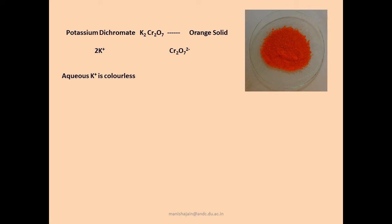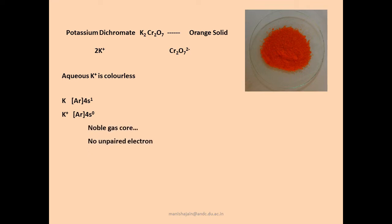Aqueous potassium ion is colorless. Salts like potassium chloride and potassium nitrate are colorless because potassium ion has the electronic configuration of the inner noble gas — the inner argon core. When the potassium atom forms the potassium ion, the one electron in the 4s orbital is lost, leaving us with the compact noble gas core with no unpaired electrons.